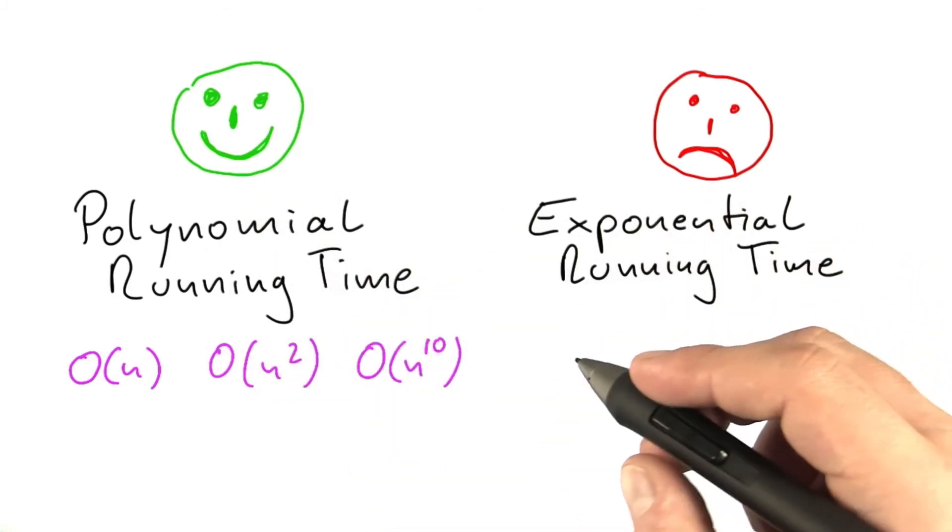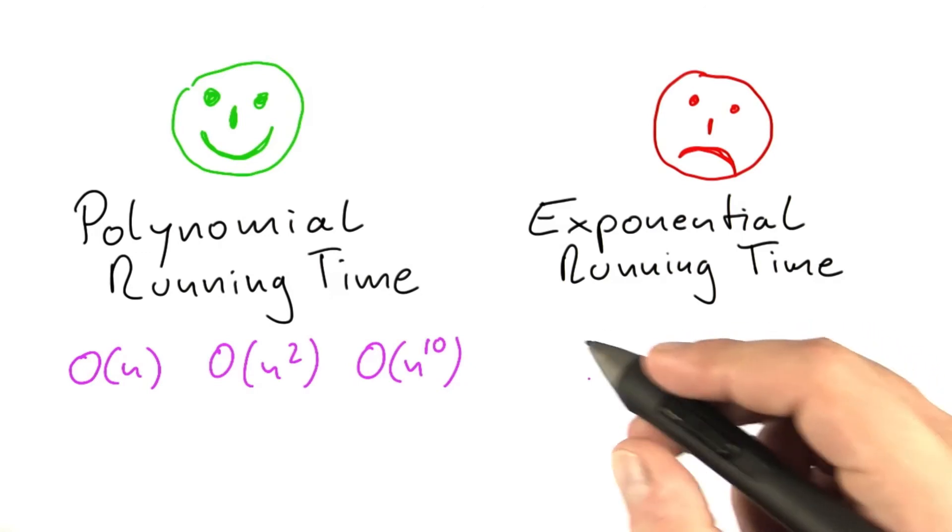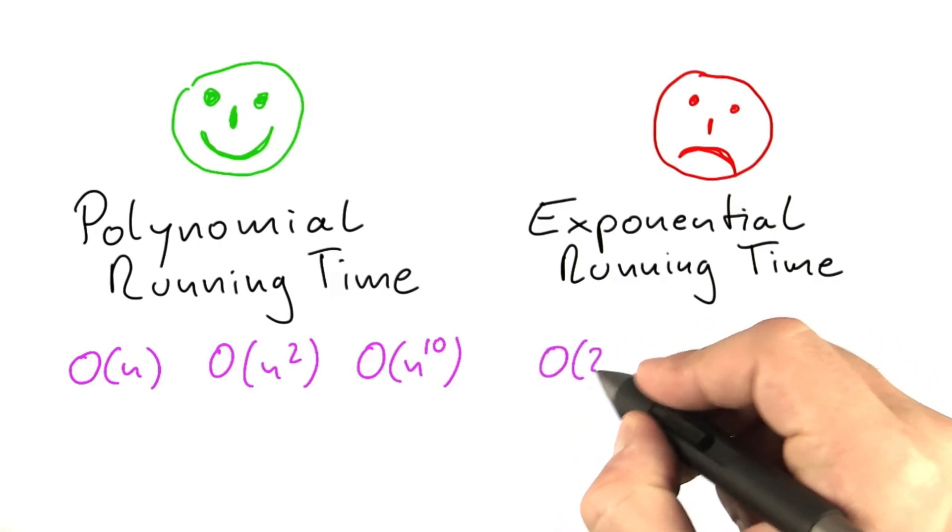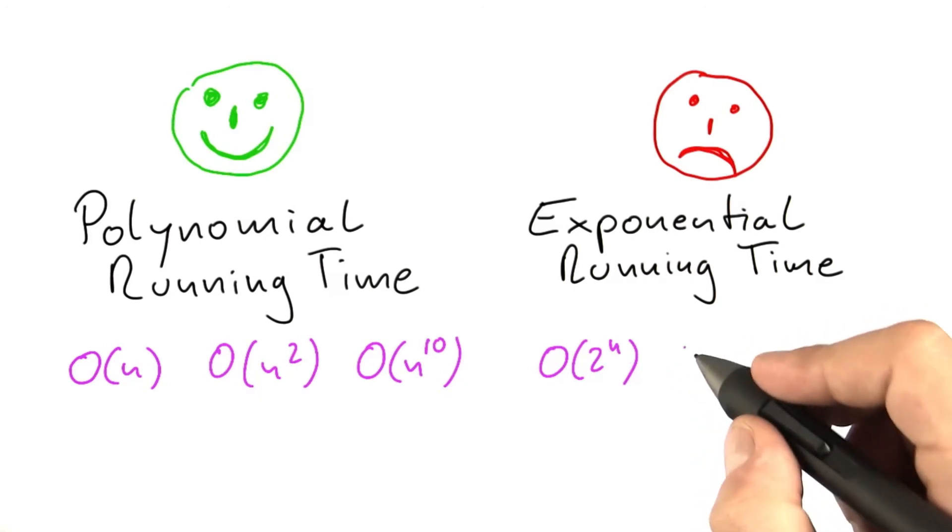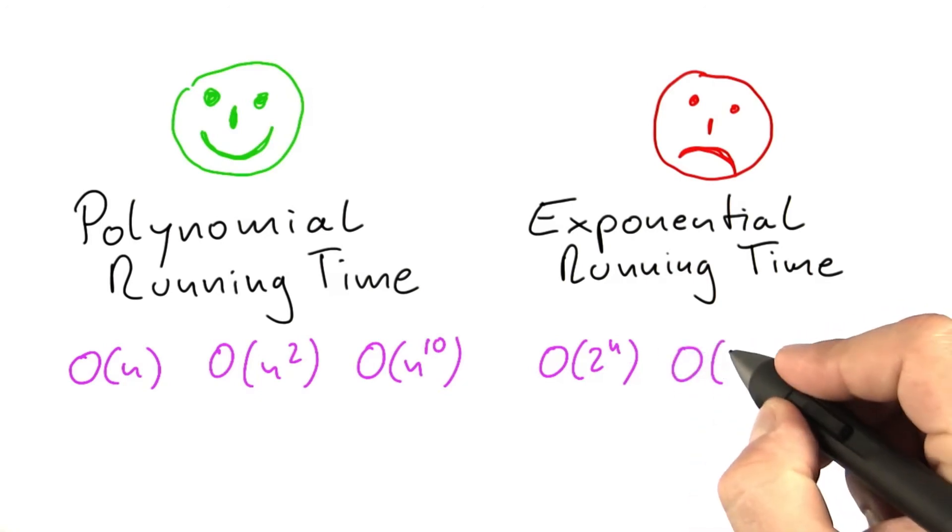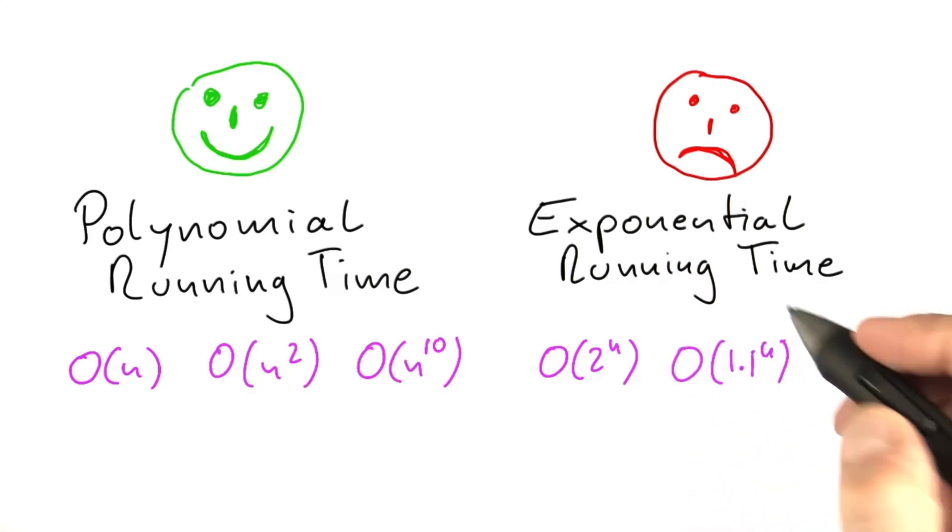Now exponential running time, those are the algorithms that have n in the exponent of their running time. So O of 2 to the power of n would be an algorithm with exponential running time. O of 1.1 to the power of n would be an algorithm with exponential running time.